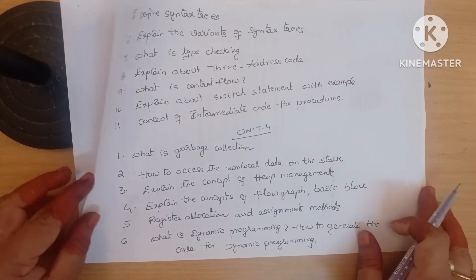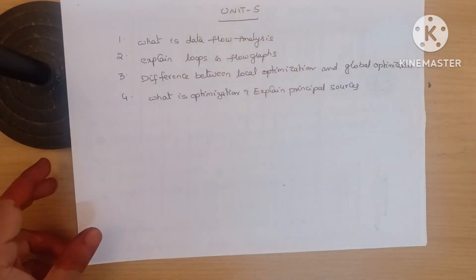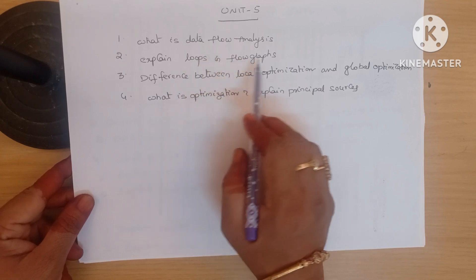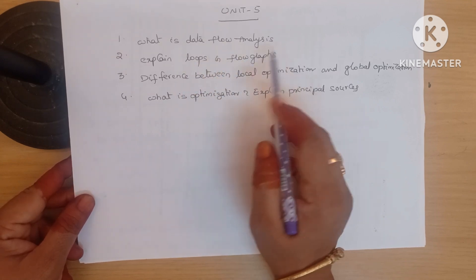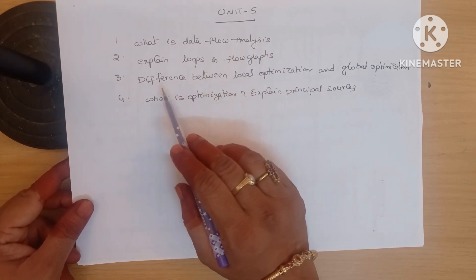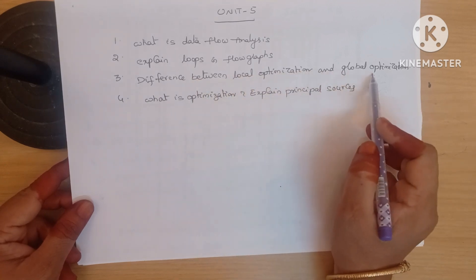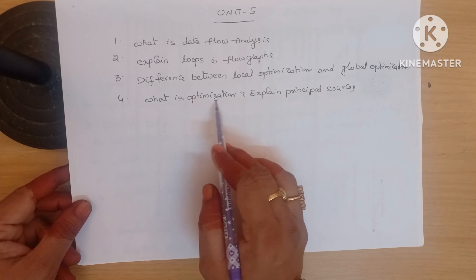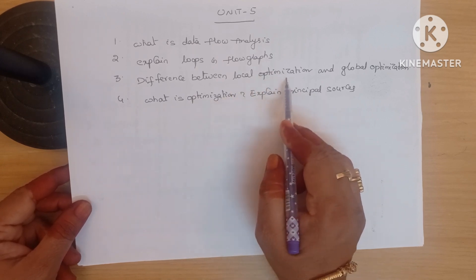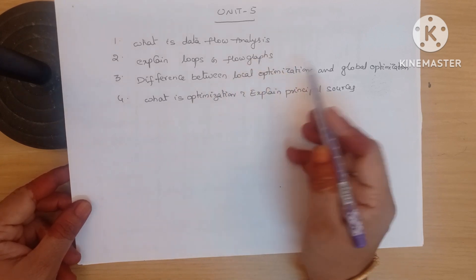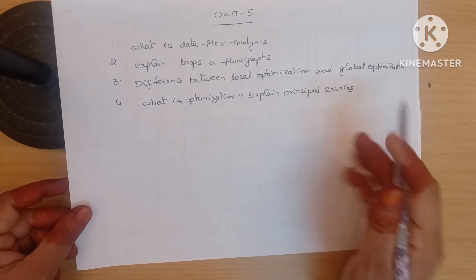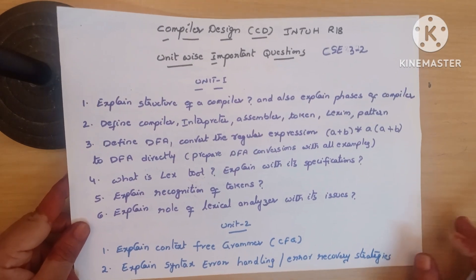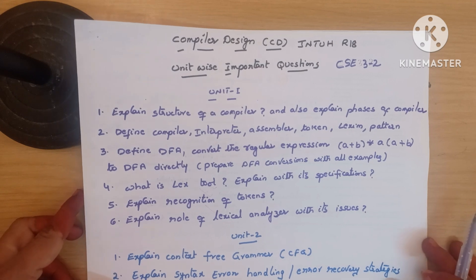Unit 5 questions: what is data flow analysis, explain loops in flow graphs, what is a flow graph, what are loops in flow graphs, difference between local optimization and global optimization, what is optimization, what are the different types of optimization, and explain principal sources of optimization. These are all the important short answer questions.